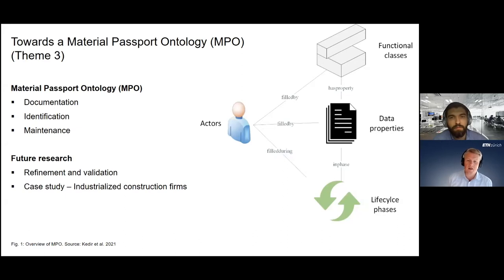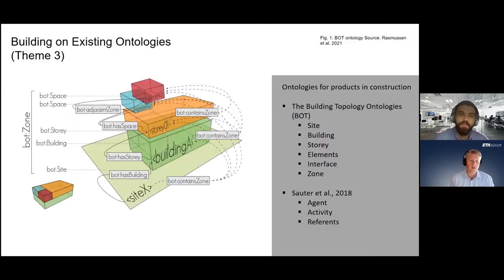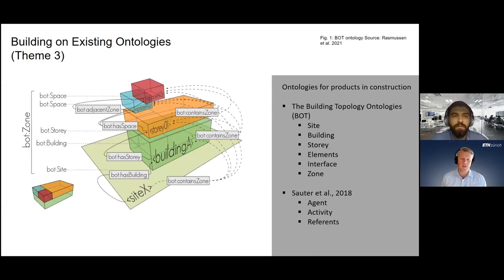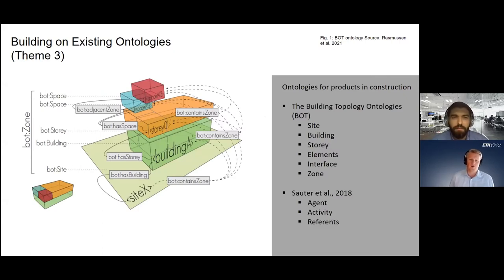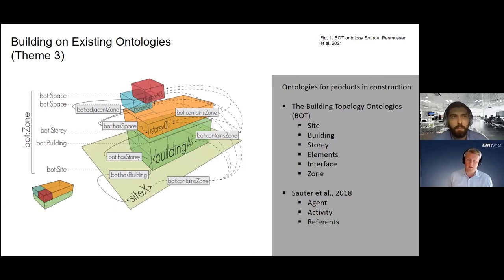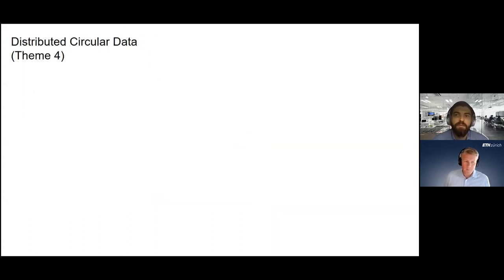The ontology should not exist alone — we are building on top of others, such as the Building Topology Ontology, which links the relationship between site, building, story, elements, interfaces and zones, and also work by Seltzer on agent, activity and reference. There is a lot of work in construction informatics around ontologies and we want to make a contribution specifically around the material passport and an ontology for that.